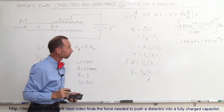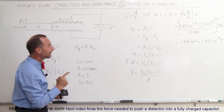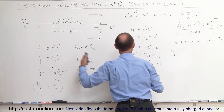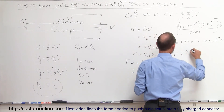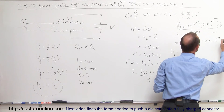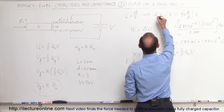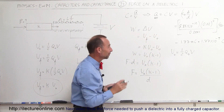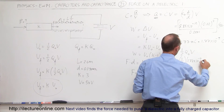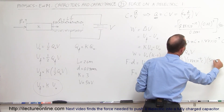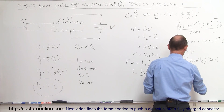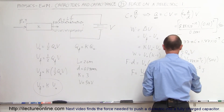Now we can calculate the energy stored in the capacitor before we put the dielectric in. U initial equals one-half times Q initial times V. Note: the value 1.77 × 10⁻⁹ is in coulombs — that's the charge, not the capacitance. So the initial energy is one-half times 1.77 × 10⁻⁹ coulombs times 50 volts, which gives 4.425 × 10⁻⁸ joules. That's the original energy.